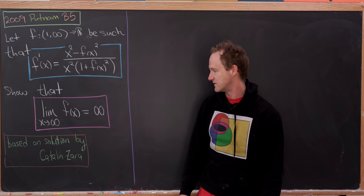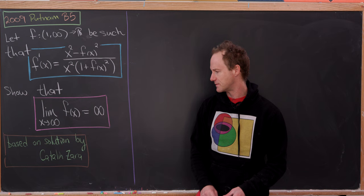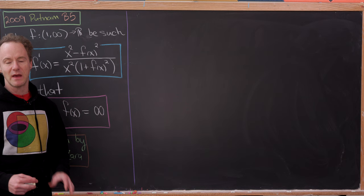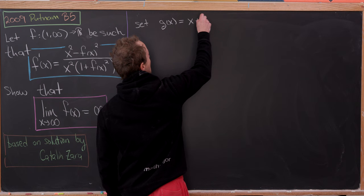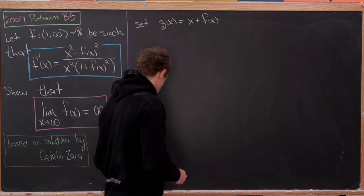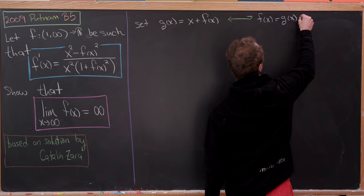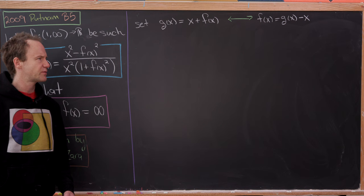There are a couple of standard solutions to this problem, but we're adapting from the solution by Cattle and Zara. The main idea is to use accessory functions built out of f(x). We'll set our first accessory function g(x) equal to x plus f(x). We can invert this to get f(x) = g(x) − x. Our only tool is the differential equation for f, so we should use it to get a differential equation for g.